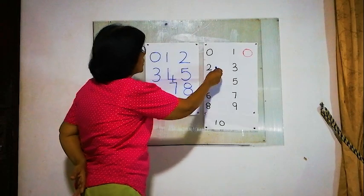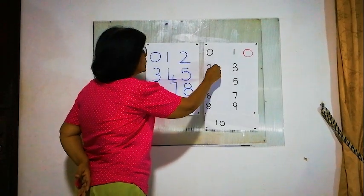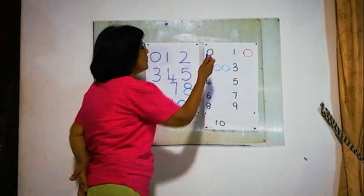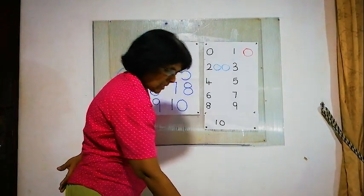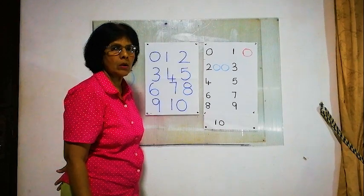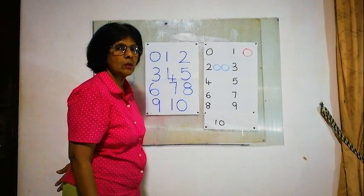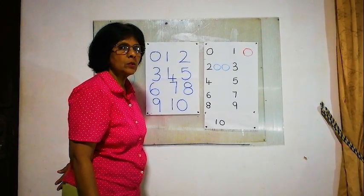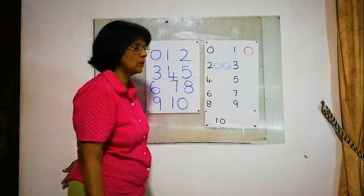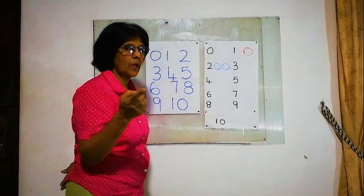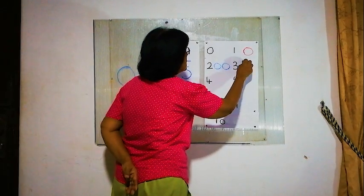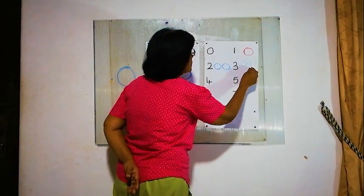For 2, we can draw 2 balls. For 0, we can't draw anything, right? For 3, how many balls can we draw? Can we draw 2 balls? No. 4 balls? No. We have to draw 3 balls: 1, 2, 3.